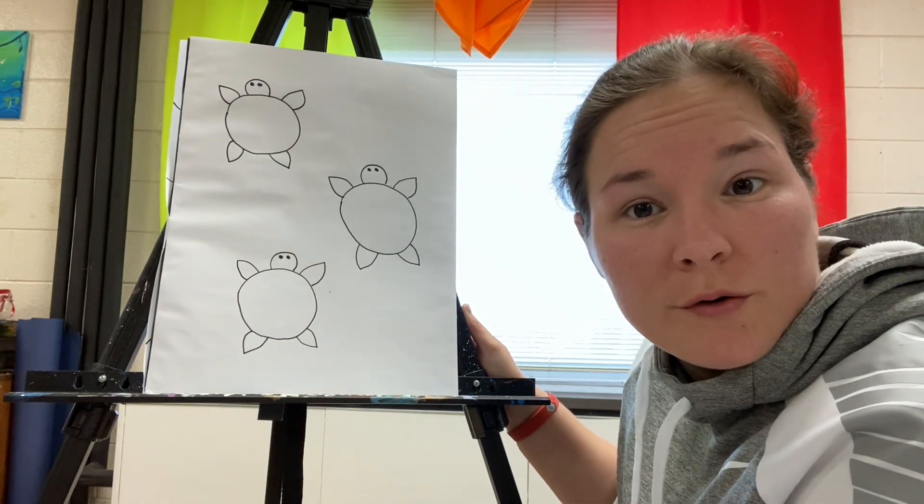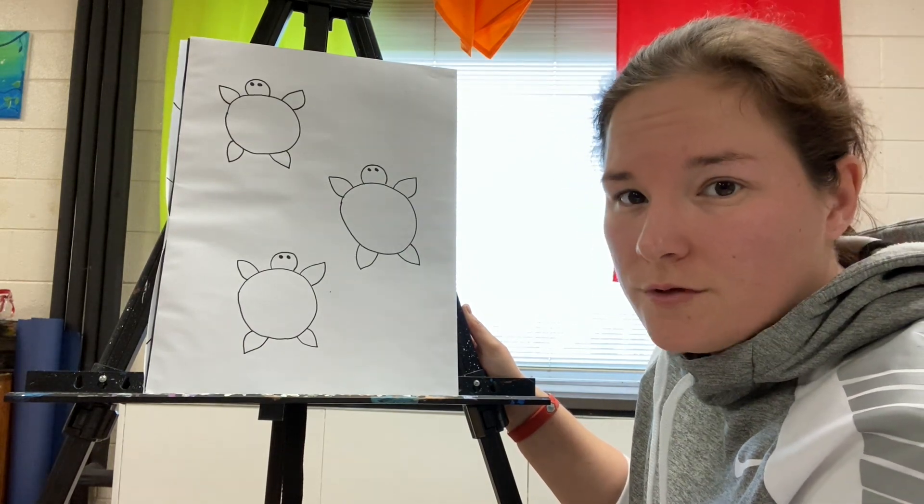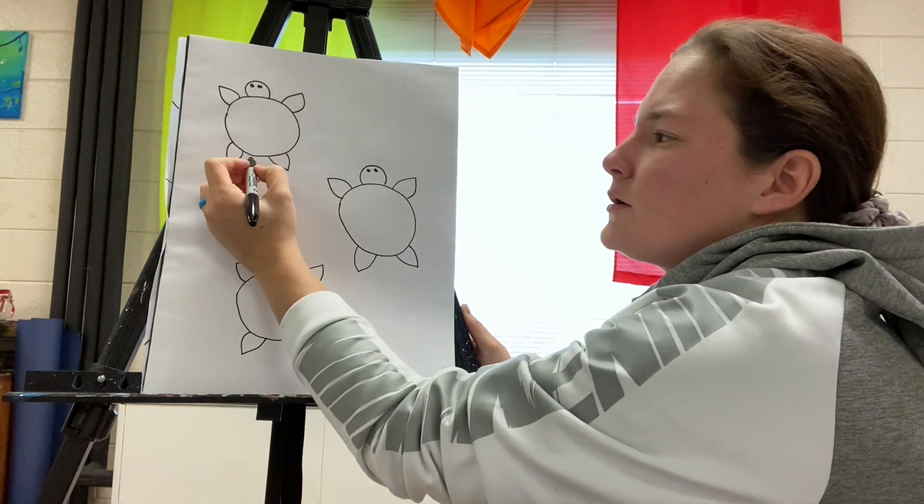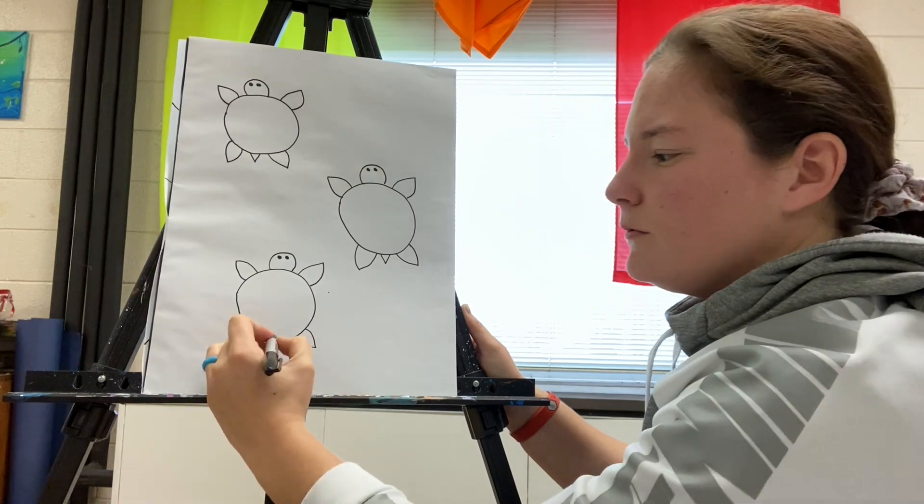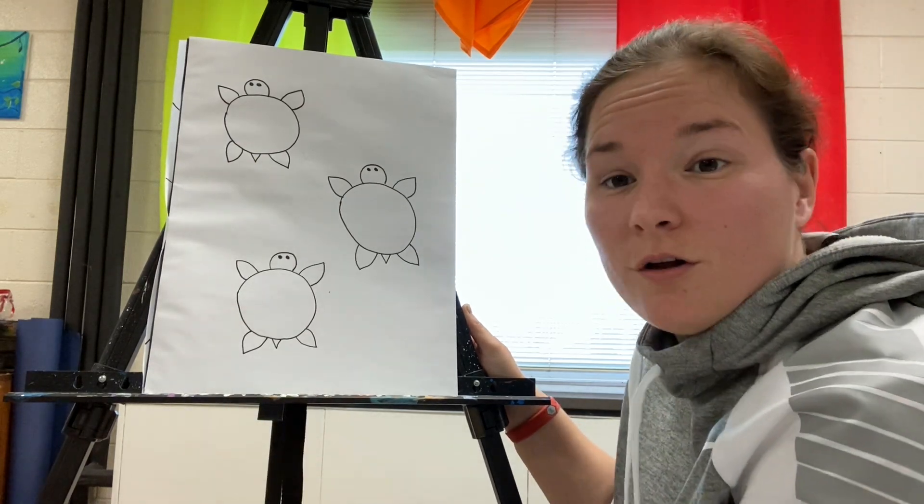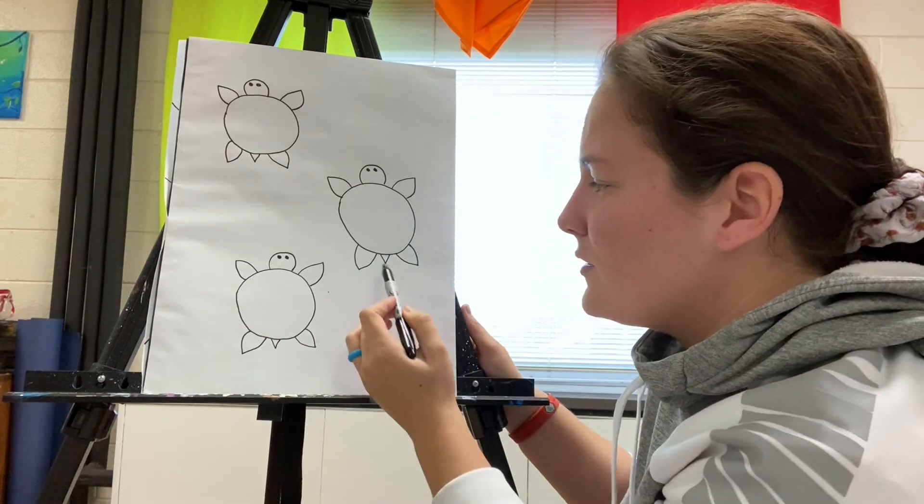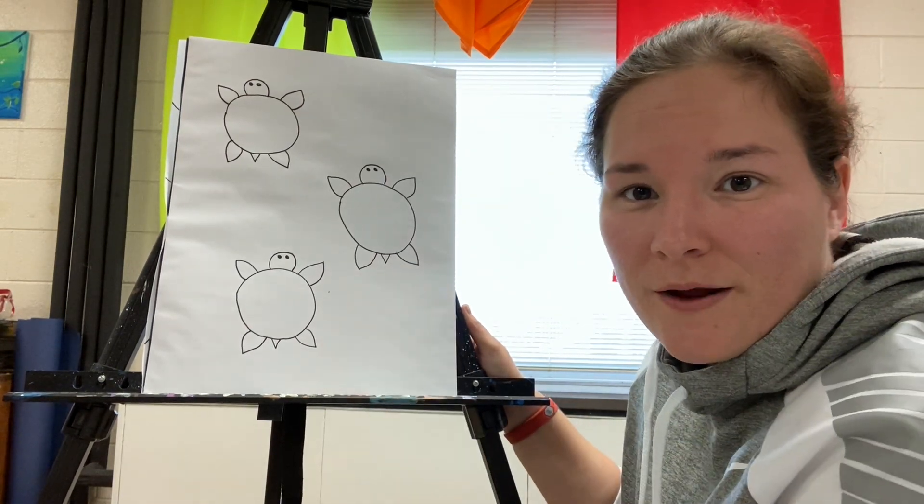Now, I can't have a turtle without a tail. So I'm going to put a small triangle tail on each of my turtles between these two back legs. So right here. One, two, three. And if you look closely, that's just the letter V. I called it a triangle earlier, but if you think about it, just start on the shell, make a V, and connect back to the shell.